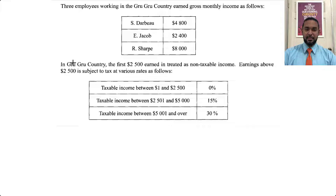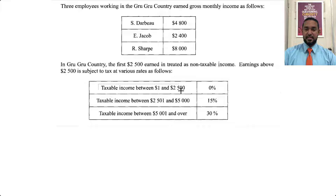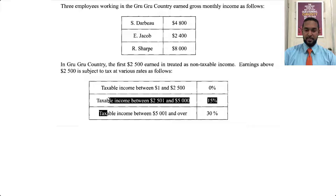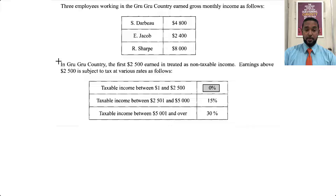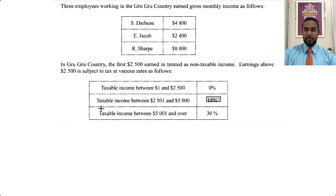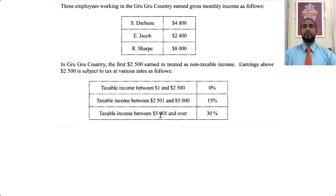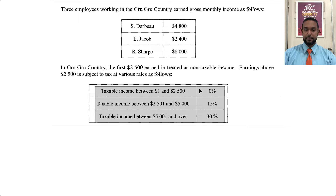The error I think is this: they're telling you that the first $2,500 in income is treated as non-taxable, and then they're also saying that the first $2,500 of taxable income is not taxed. I think they shouldn't have put the word 'taxable' in this table. It should just say that income between $0 and $2,500 is taxed at 0%, corroborated by what they said in the sentence above. Then income between $2,500 and $5,000 is taxed at 15%, and income over $5,000 is taxed at 30%. But I'm going to work it two ways.